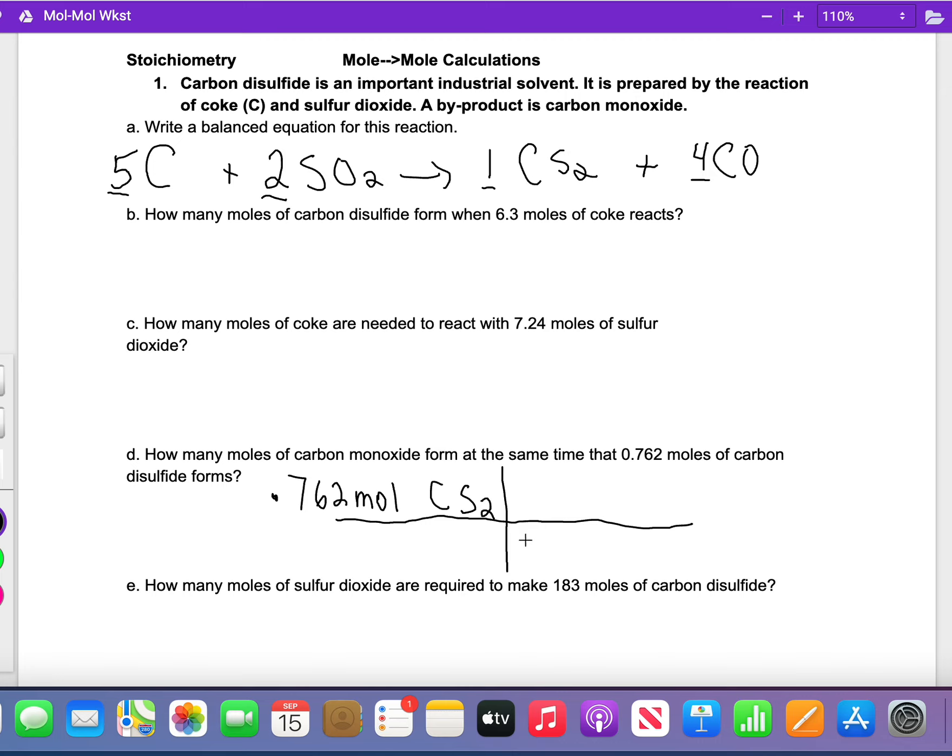So we have 1 mole CS2. Where did I get the 1 at? It's from the balanced equation. Now what are we trying to look for? How many moles of carbon monoxide? So I look up here and it's 4 moles CO. Then I would take 0.762 times 4 divided by 1. This has 3 sig figs, so I end up getting 3.05 moles carbon monoxide.